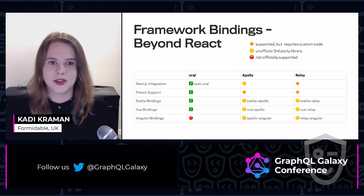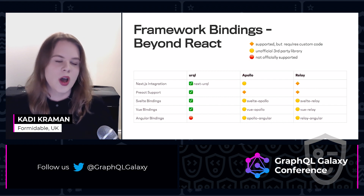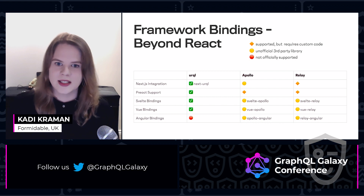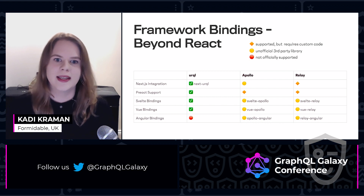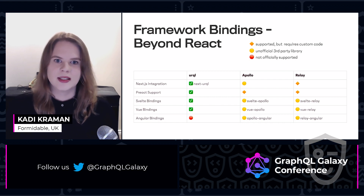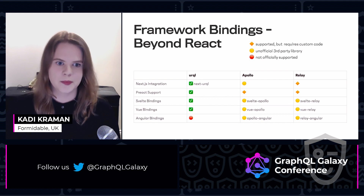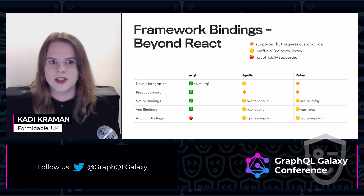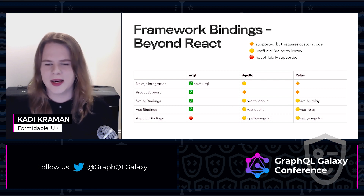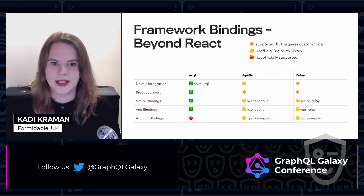Apollo Client and Relay don't actually provide any kind of first-party support for framework bindings outside of React — they rely fully on third-party libraries. This is completely fine; those libraries were designed for React after all, and it's the community that wanted to use them for other frameworks. However, this can have detrimental ripple effects. When the library implements new features or breaking changes, those take time to propagate into the third-party libraries, whereas with first-party support, these changes are built into the bindings from day one.